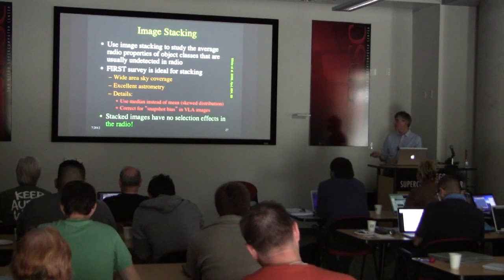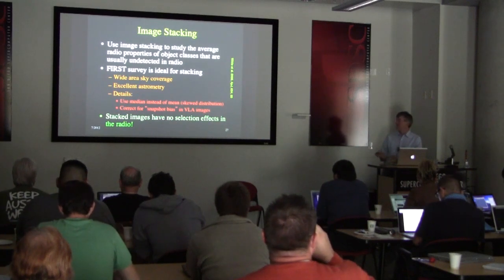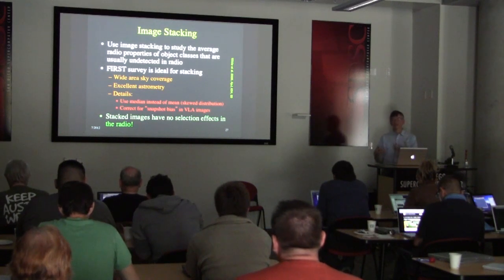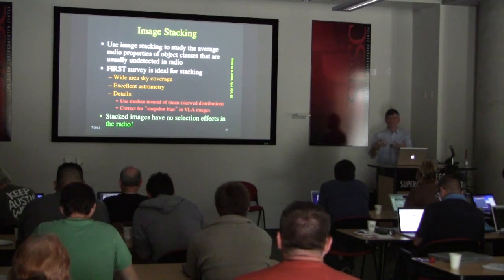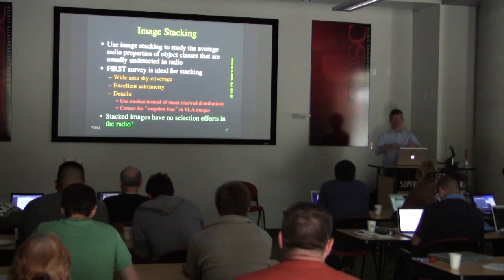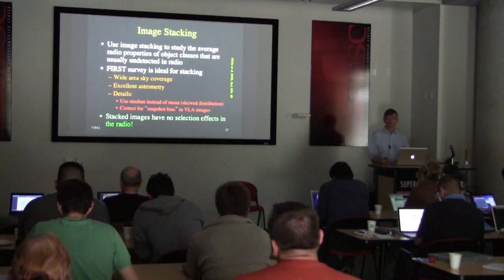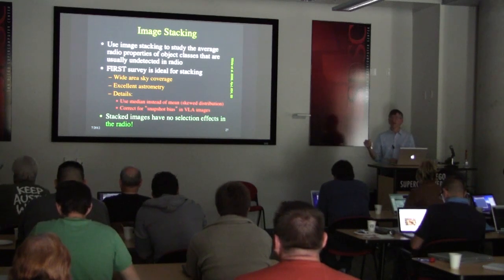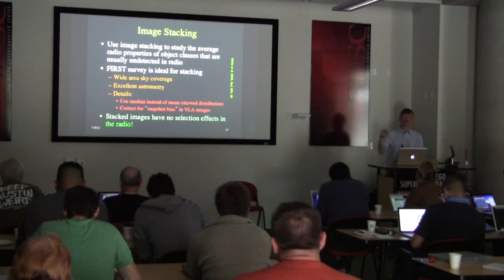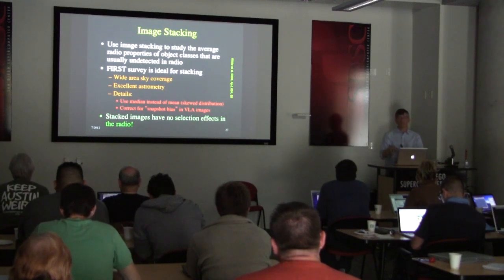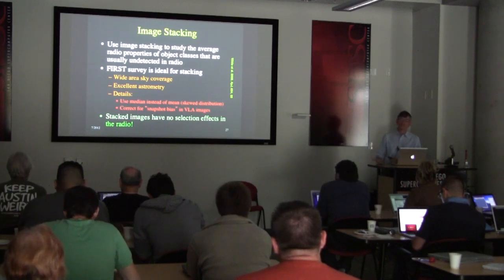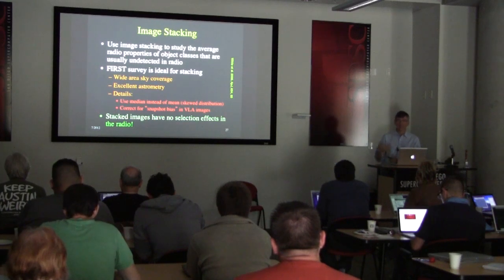Another effect to worry about is 'snapshot bias.' The images we create are not perfect radio images with a linear response to true source brightness. There are biases that, surprisingly, persist right down to zero flux in the noise. We can detect evidence for these biases even deep in the noise, which clearly result from the complex deconvolution algorithm used to create the images, though we don't fully understand their origin in detail.